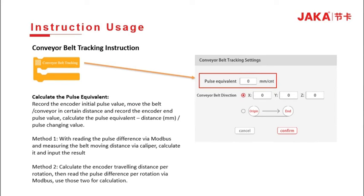Select and click the Conveyor Belt Tracking instruction. We can set up the pulse equivalent and conveyor belt direction in the pop-up window. Regarding the pulse equivalent, we need to read the encoder pulse start value and then the end value, then calculate it with the distance the conveyor advanced. The pulse equivalent equals the pulse difference divided by the distance.